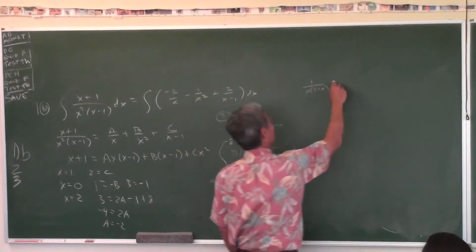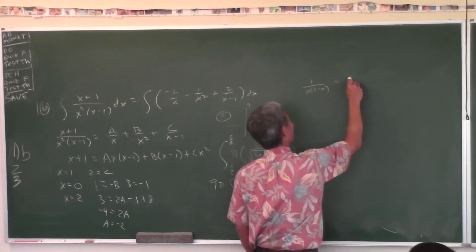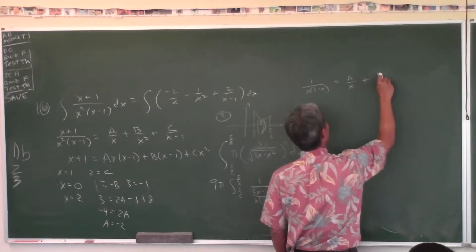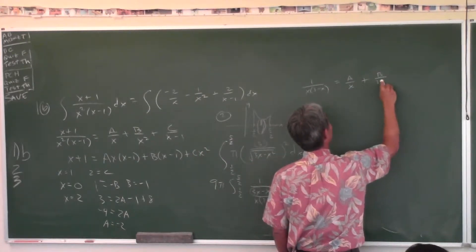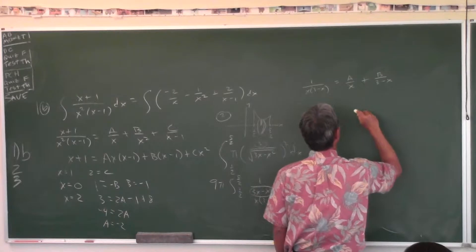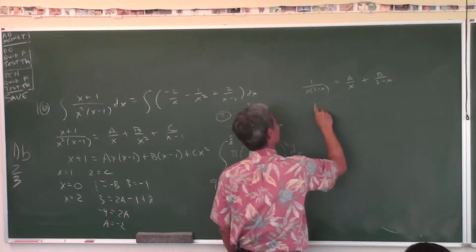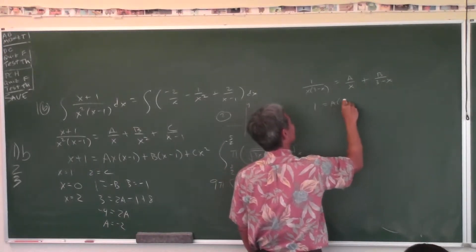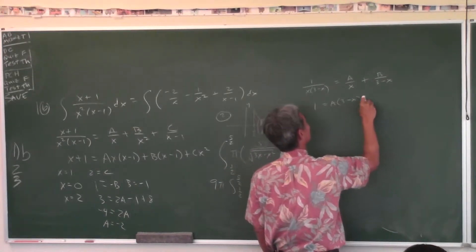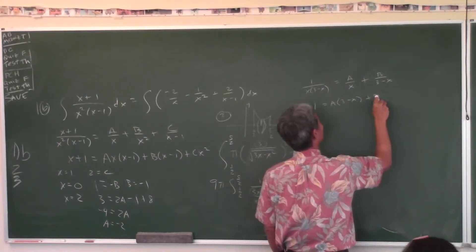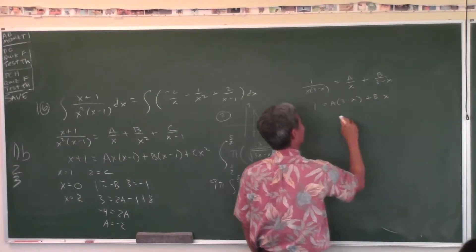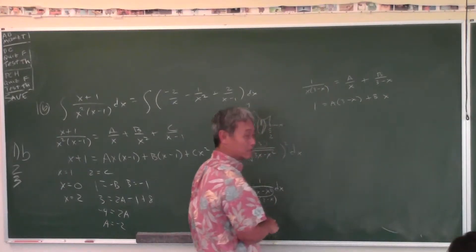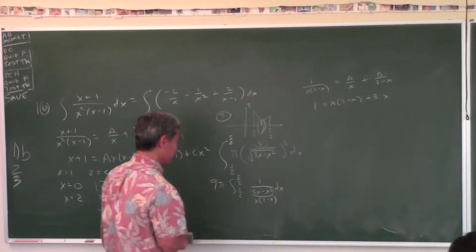Set it up as A over X plus B over (3 minus X). Multiply both sides by the LCD and you get that expression. Then use Heaviside.